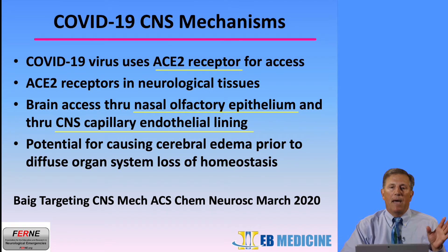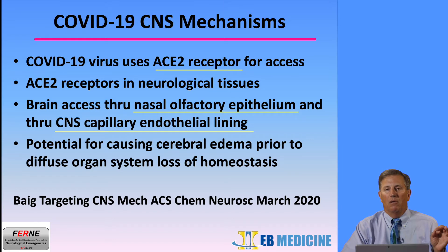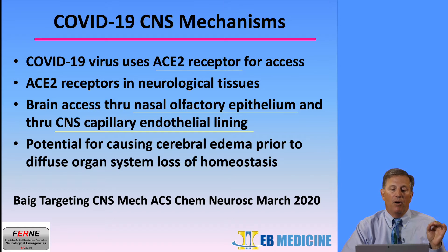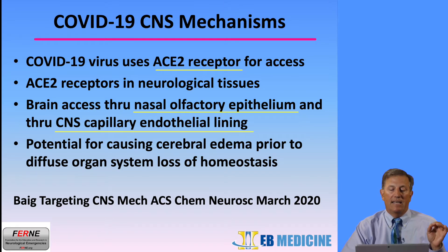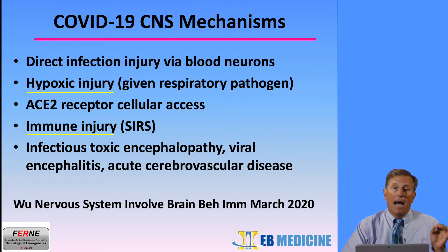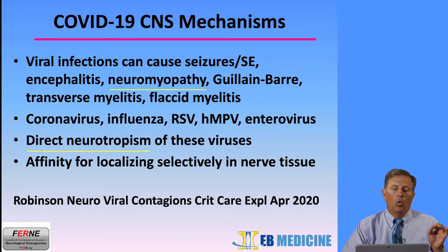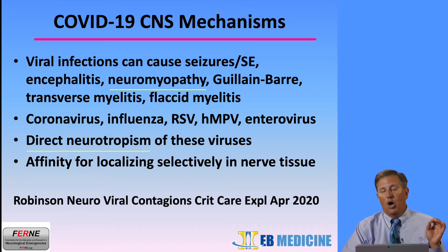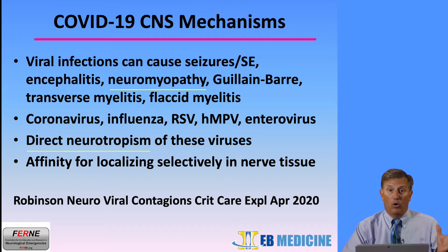The CNS mechanisms involve ACE2 receptors, which are the binding site for the virus. The virus gains brain access through the nasal olfactory epithelium and the CNS capillary endothelial lining. There is hypoxic injury with COVID-19, immune injury and SIRS, and neuromyopathies can occur. The COVID-19 virus has a direct neurotropism, meaning it prefers neural tissue.